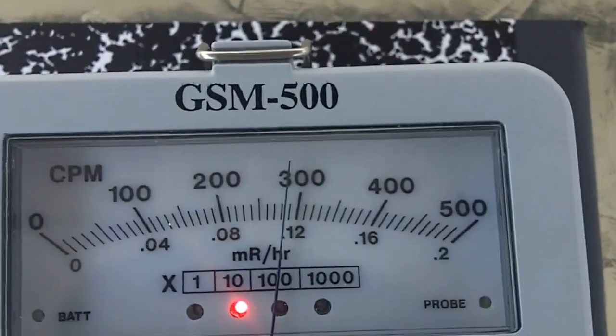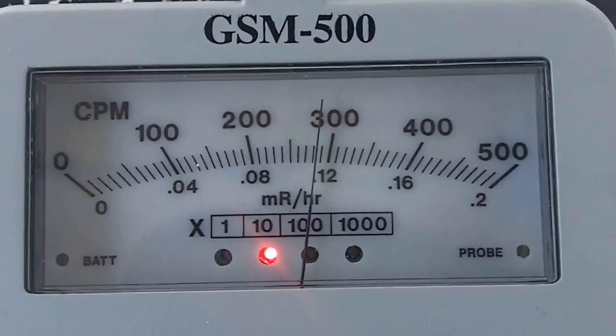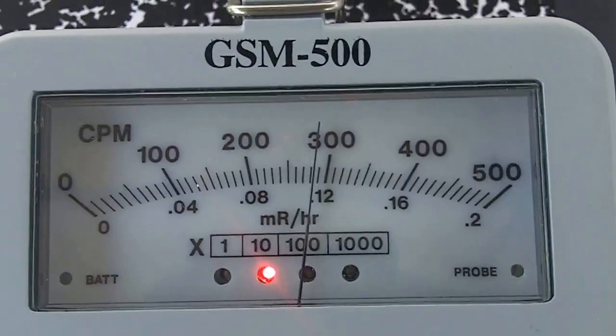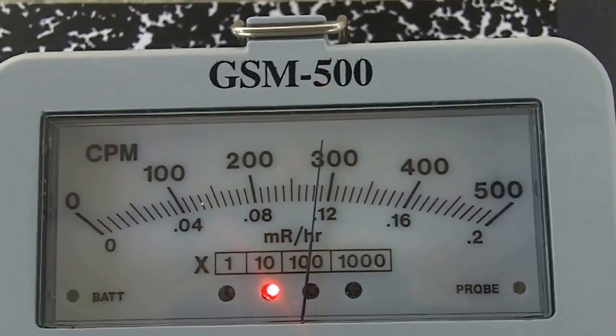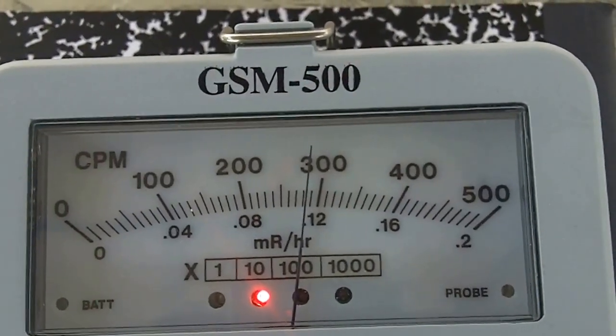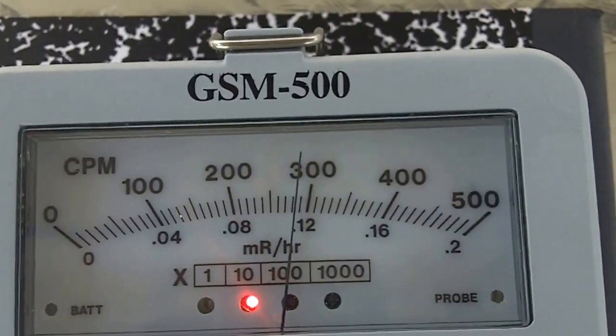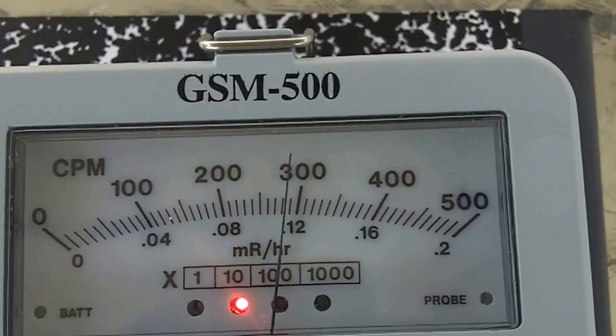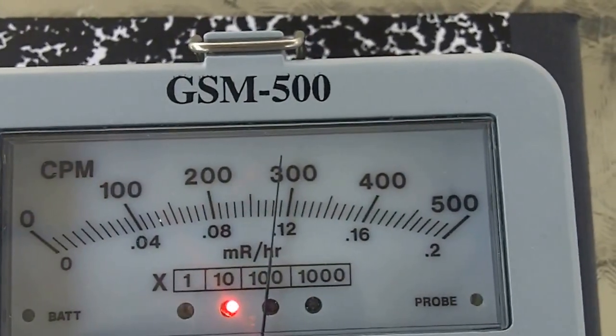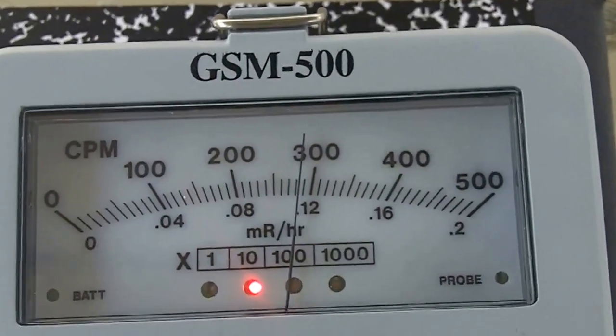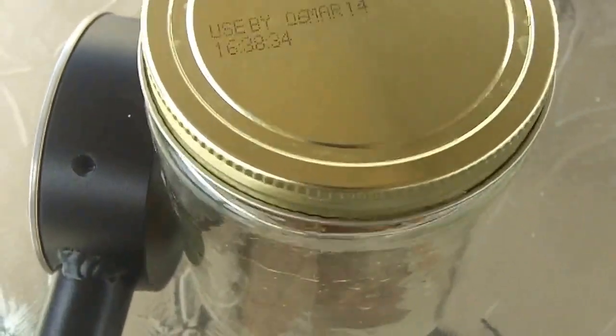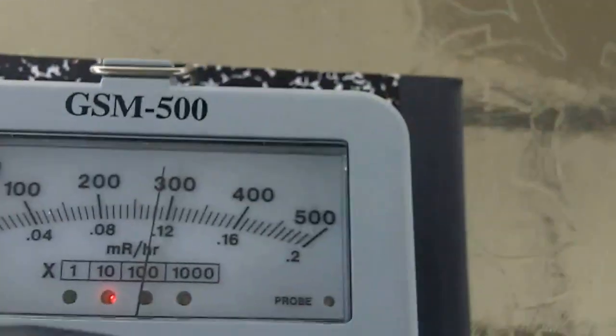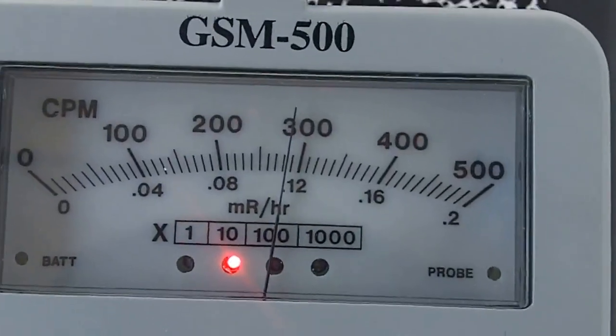Wow. Twenty-nine hundred counts. Let's see if we can get three thousand counts. Three thousand. Depends on how I move the jar or the probe. Nope. Looks like twenty-eight hundred is going to be the max for gamma rays. There it is.